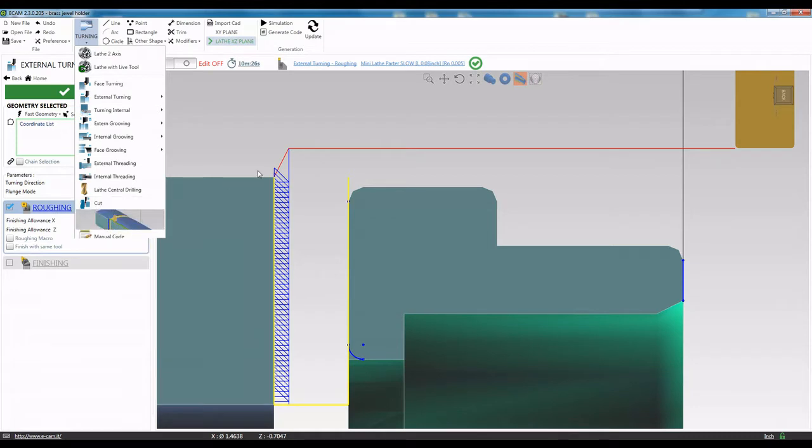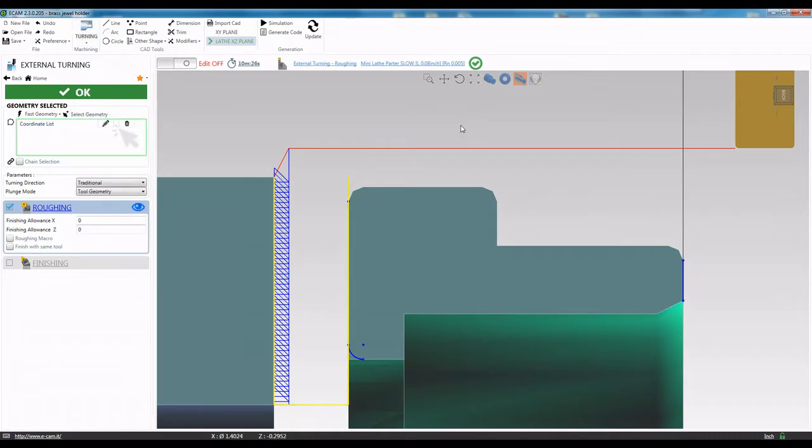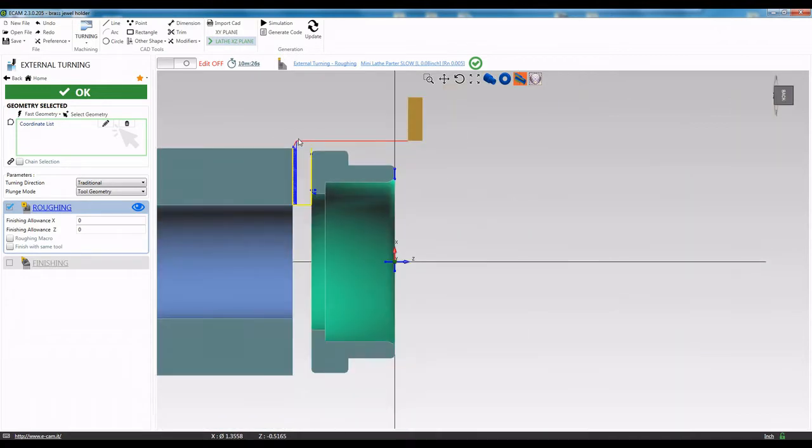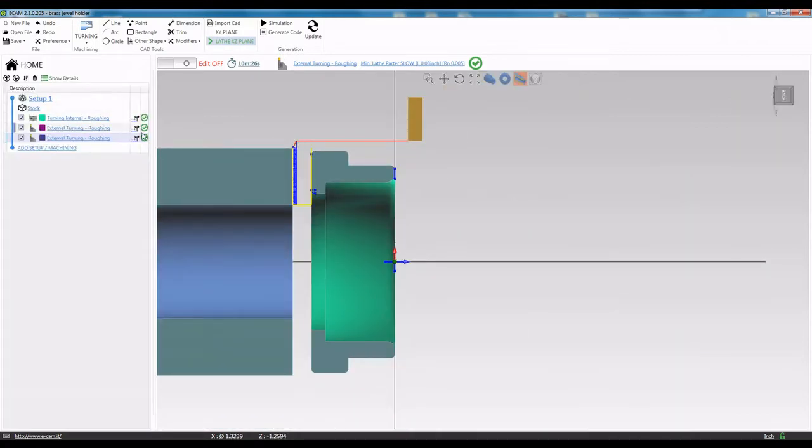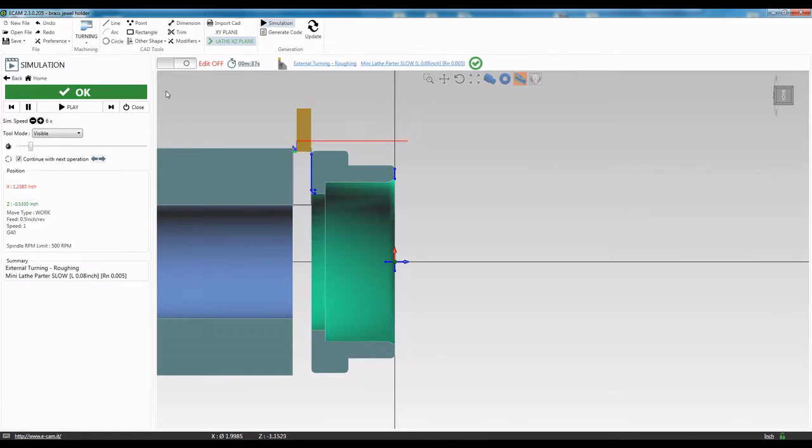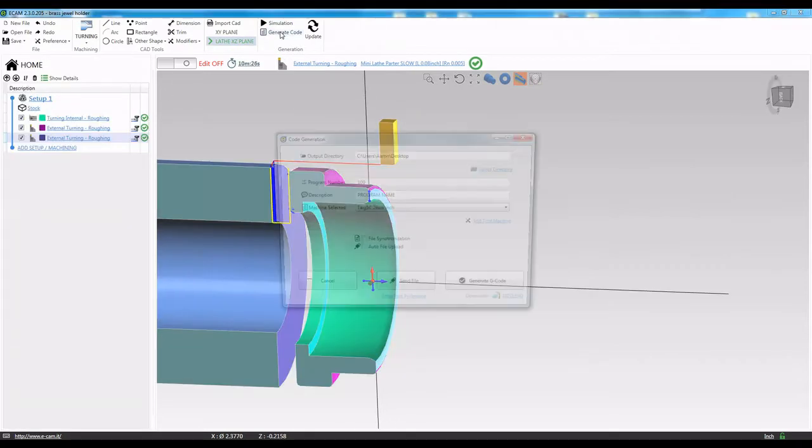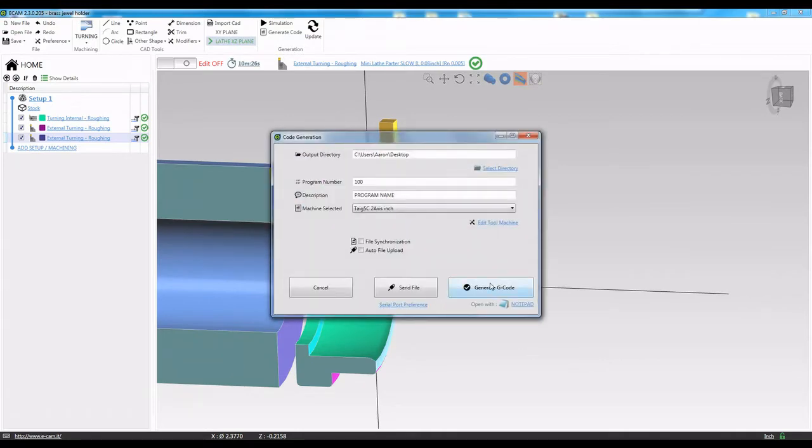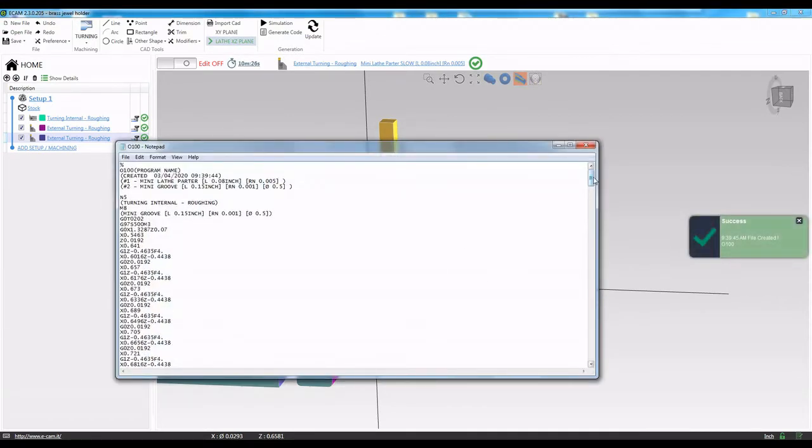eCAM has a nice simulation tool where you can visualize the steps of each toolpath. We attempted to demonstrate it here but it didn't work with having the screen recorder running at the same time. So we will skip this step and just go straight ahead to generating the G code. Here you can see we click on the G code button and it creates a text file with the machine code.